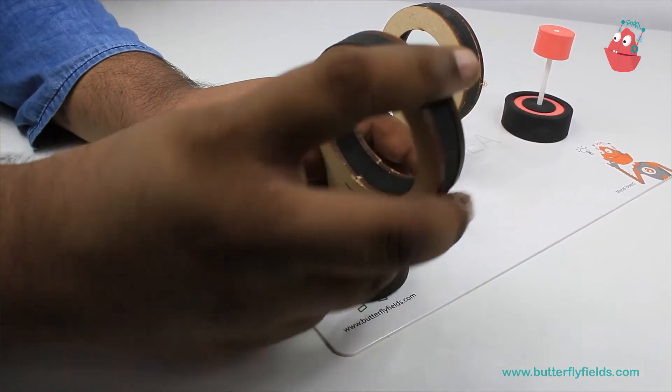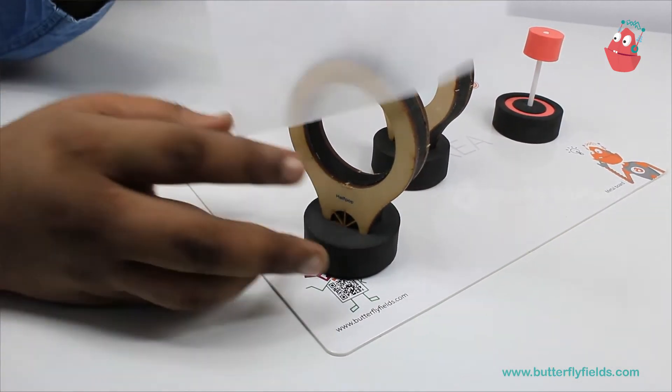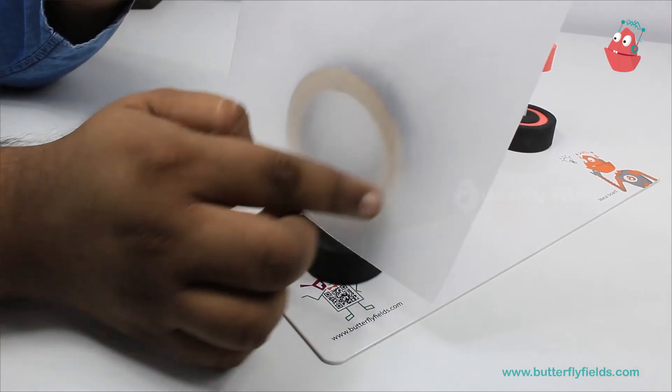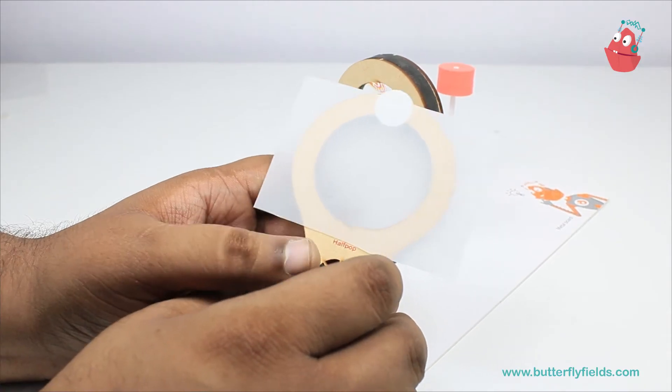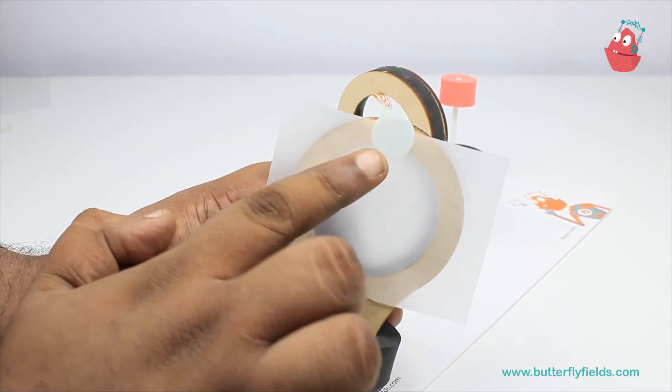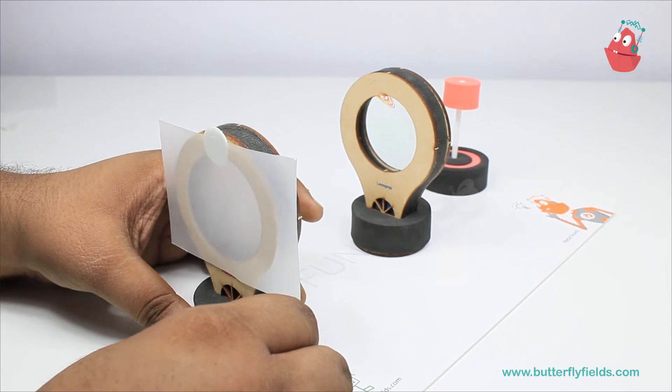Now we have to stick this butter paper here. You can just cut out a piece of it, and using double-sided tape we will stick it. So here I have cut the butter paper and using double-sided tape I have stuck it onto the half pop. Now you can keep it here.